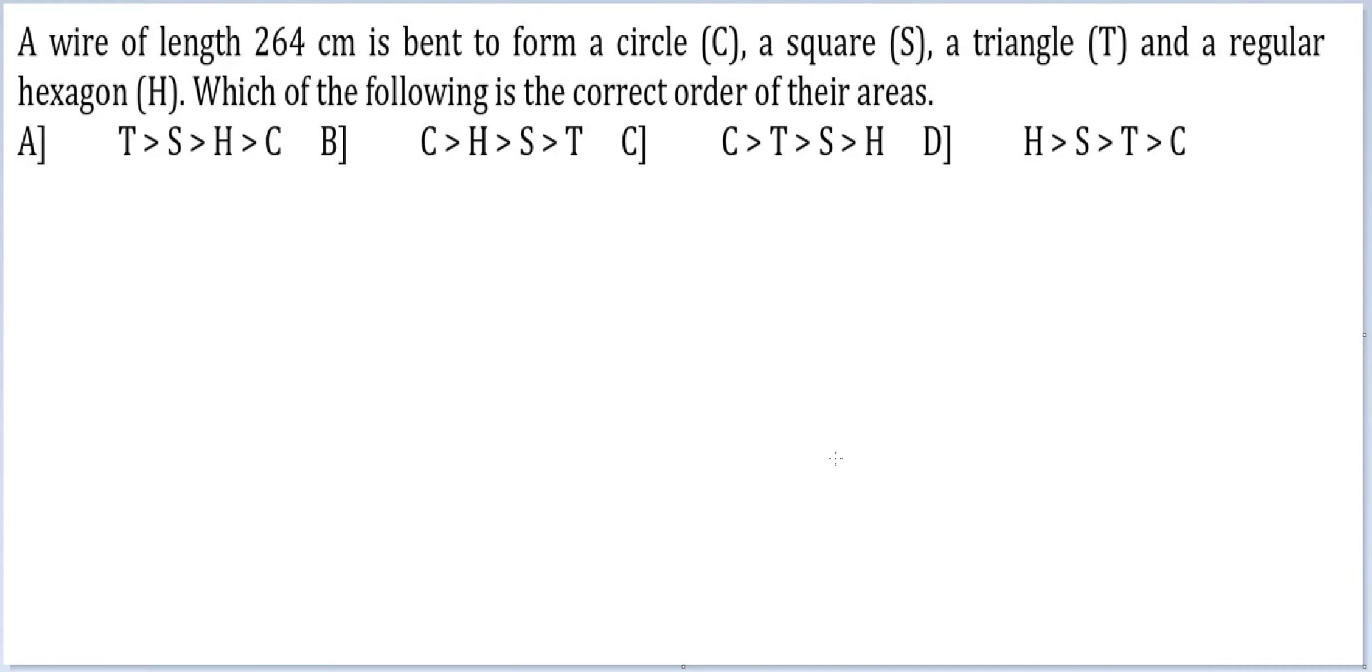Let's look at this question. A wire of length 264 cm is bent to form a circle, a square, a triangle and a regular hexagon. Which of the following is the correct order of their areas?